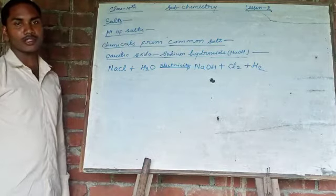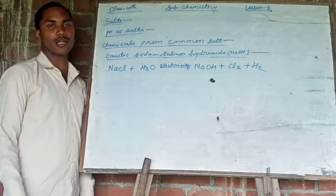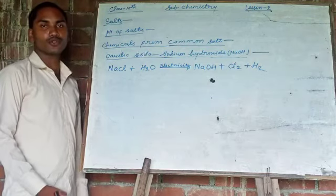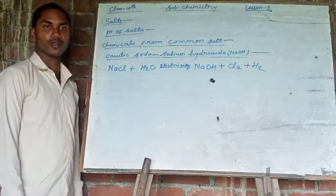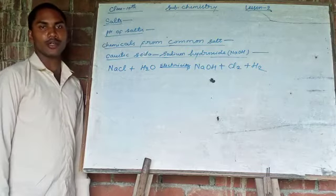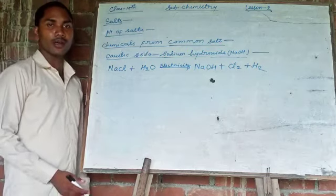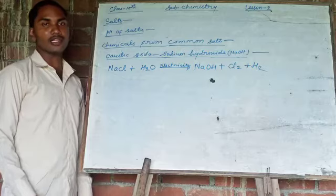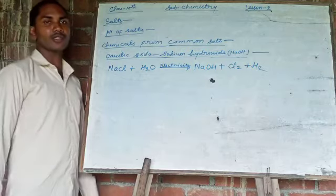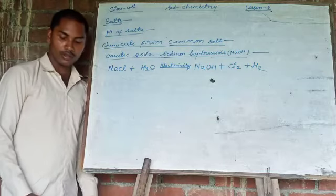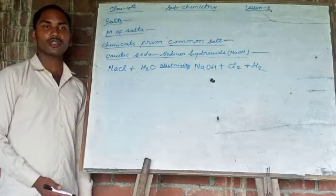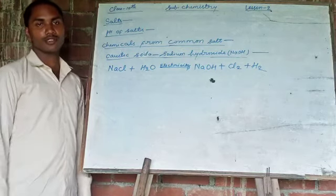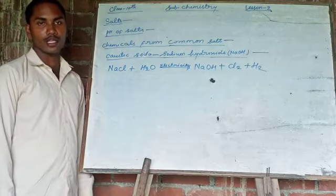Now we will discuss the uses of sodium hydroxide. Sodium hydroxide is used in the manufacture of soap and detergent. It is also used in the textile industry to make unshrinkable fiber. Sodium hydroxide is also used as a laboratory reagent in labs. It is also used in the refining of petroleum.